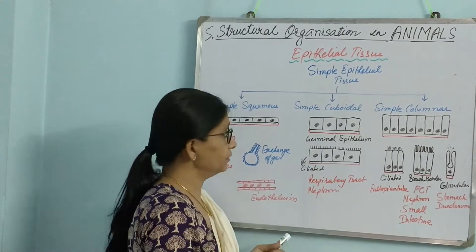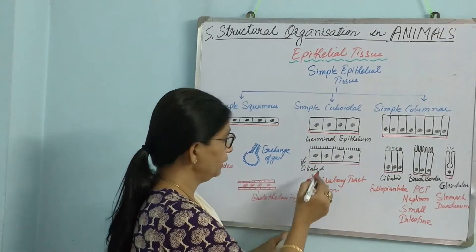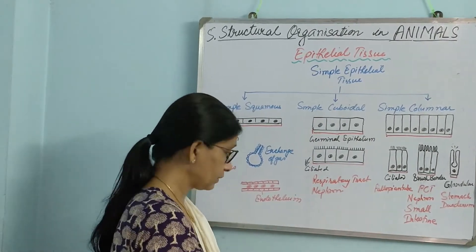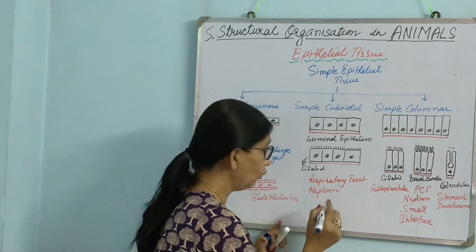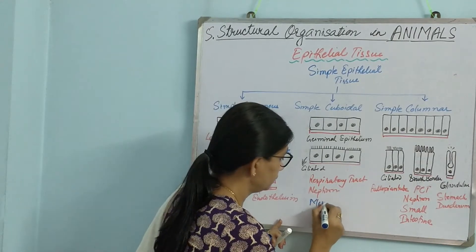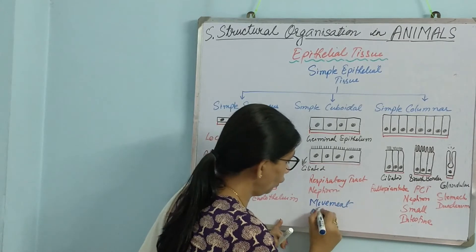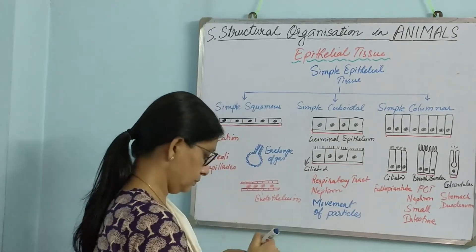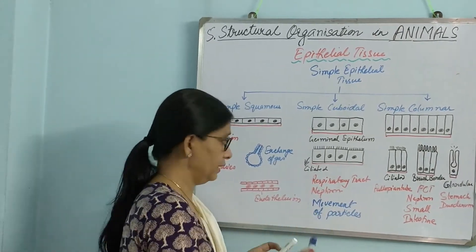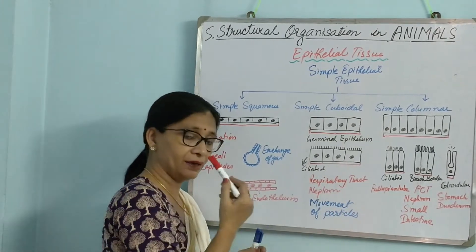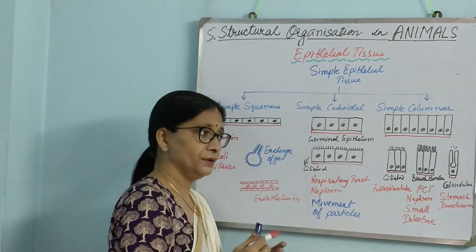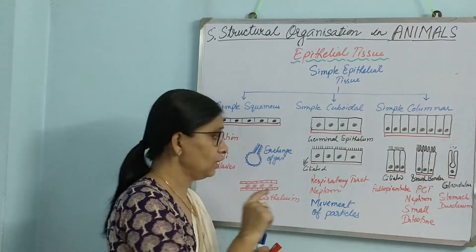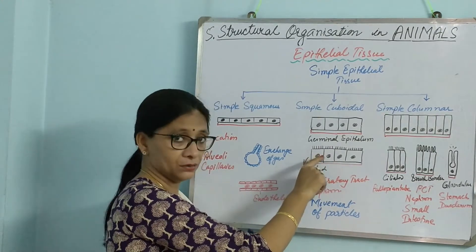Then we have ciliated simple cuboidal as well. They are present in the respiratory tract and nephron. The function of these is movement. In your nostril, if you observe closely, you will see small hair-like structures — that is nothing but cilia.